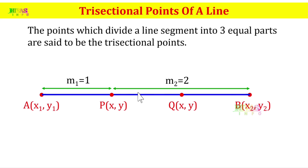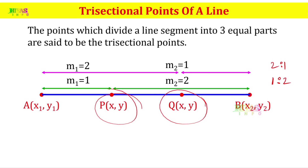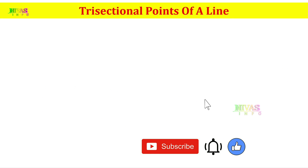Now we have one part here and two parts here. Point P is divided in ratio 1 is to 2, and point Q is in ratio 2 is to 1. To find out the coordinates, we use the section formula two times. That is different for each point. Now we have an example of this formula.